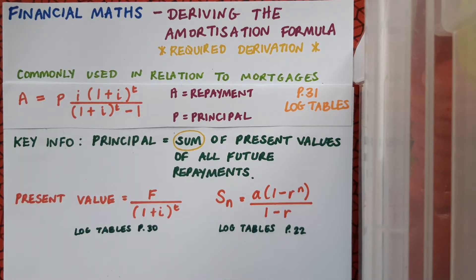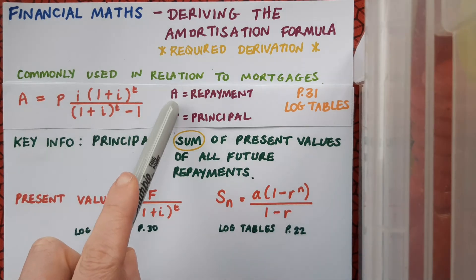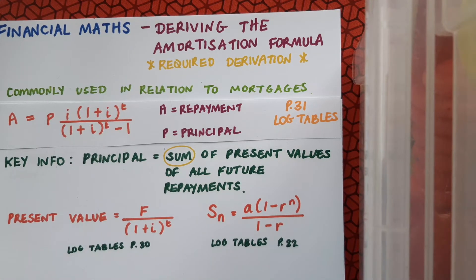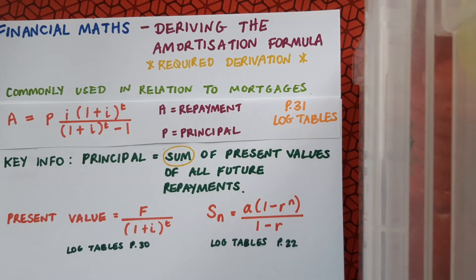So we'll keep our eye on these two formulas. And the job now will be to take my individual repayments, I'll be calling those A, and work out each of their present values, and then take those and add them all up using the Sn formula. You might want to pause the video here for a second while you make note of these key pieces of information and this statement before we go on to look at the derivation proper.